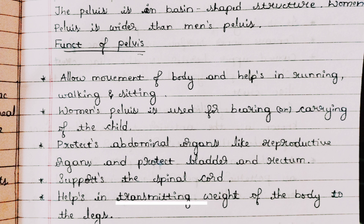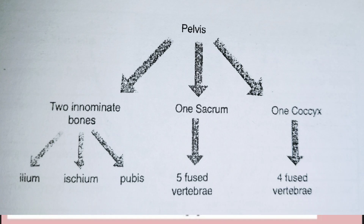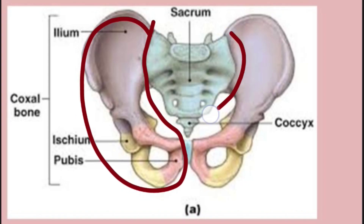The pelvis transmits weight from the lower body part to the upper body part. To summarize: it is used in running, walking, and sitting; carrying the baby; protecting vital organs like reproductive organs, bladder, and rectum; supporting the spinal cord; and transmitting weight. The bones of the pelvis are divided into four bones: two innominate bones, one sacrum, and one coccyx.